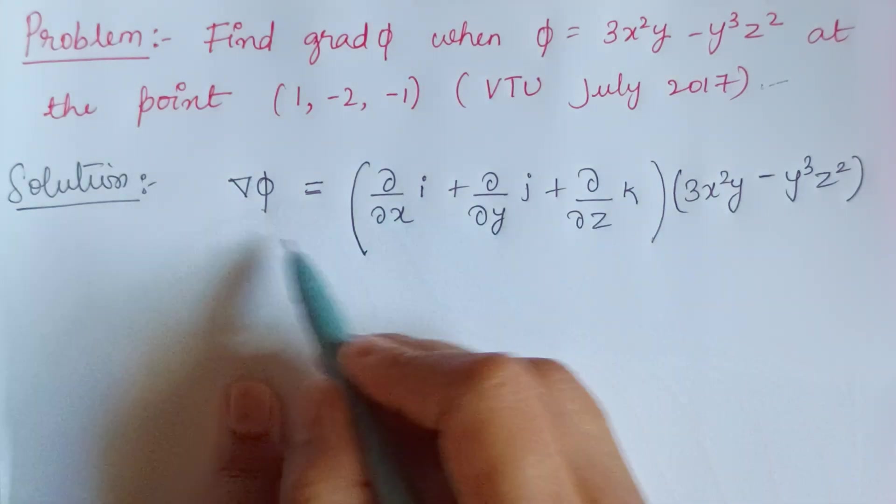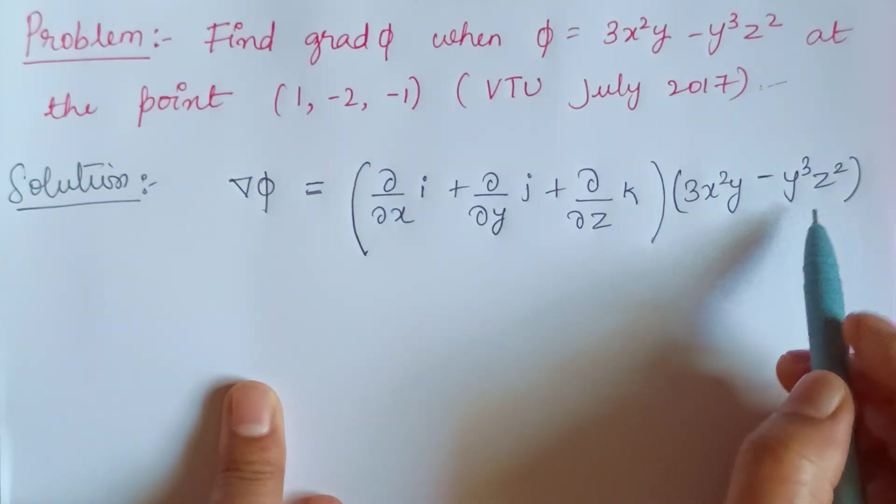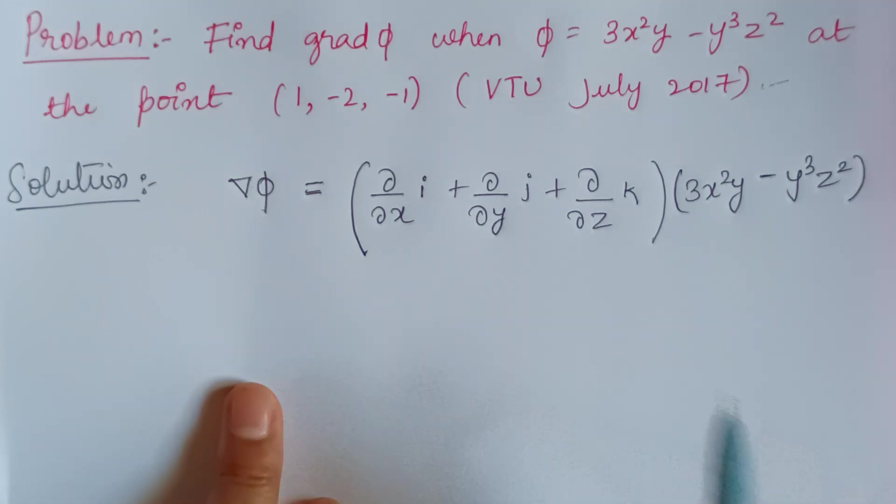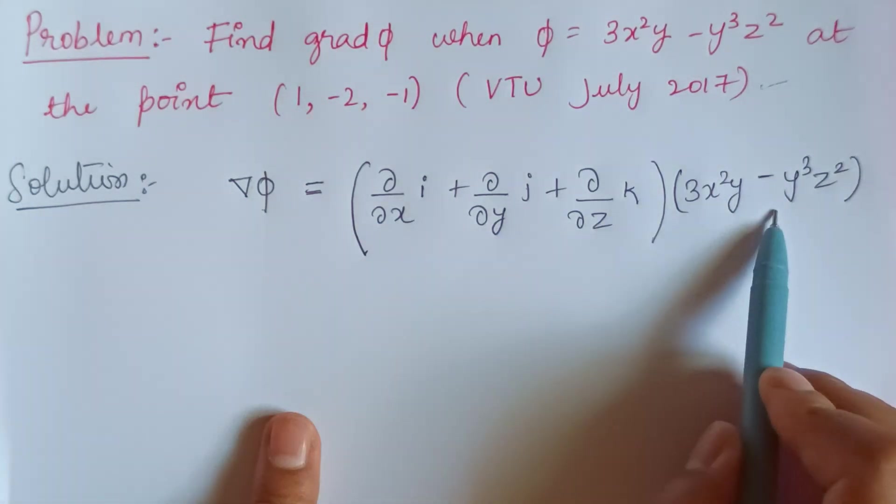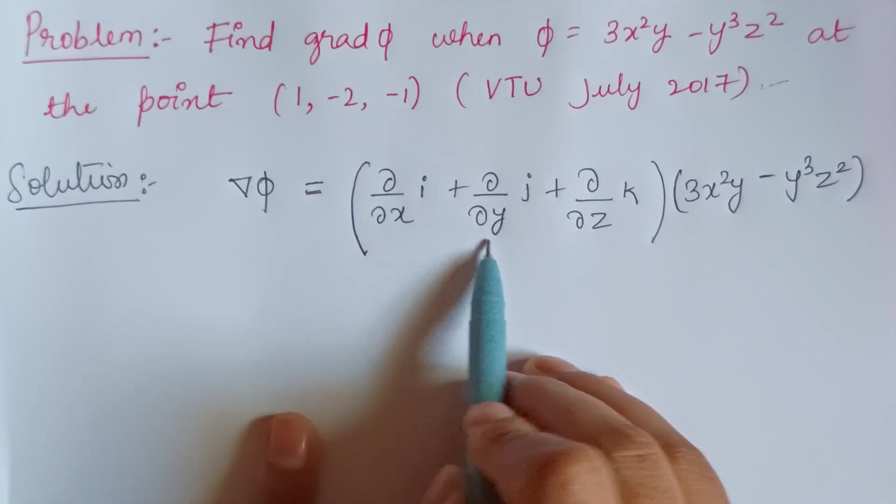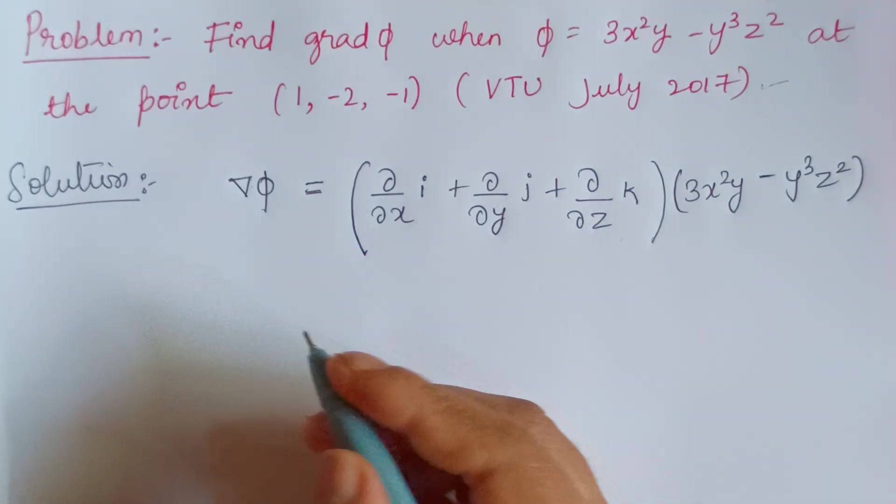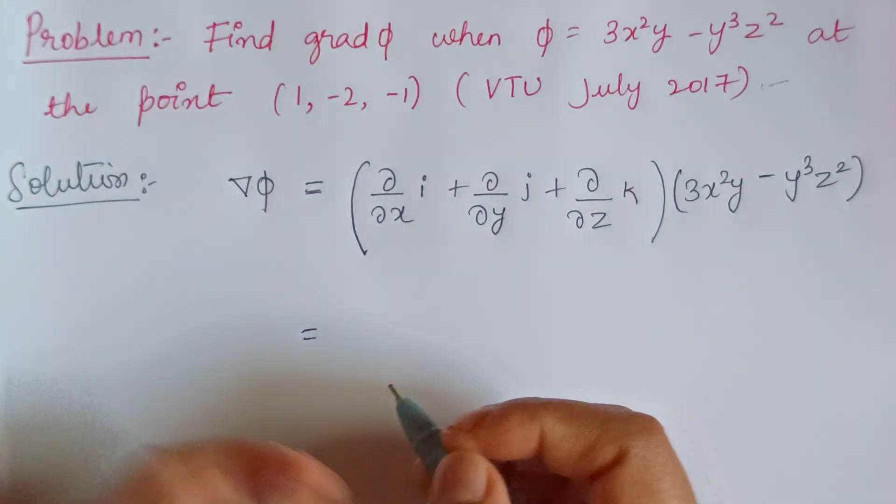Simply I have substituted del. This is del and this is phi. Now what I can do is differentiate this partially with x, partially with y, partially with z. So I'm just writing it down.